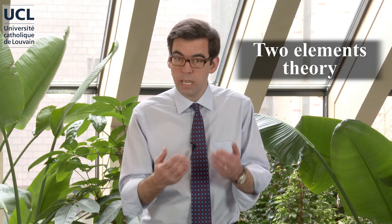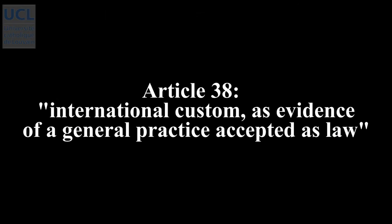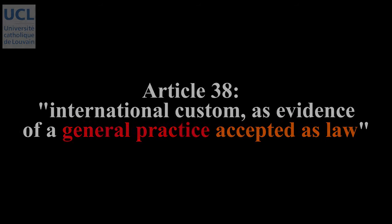The explanation that is generally provided in international law is not much different. The International Court of Justice has developed what has been called the theory of the two elements, which, when they meet, result in the making of rules that can be said to exist as rules of customary international law. The two elements are expressed by Article 38: international custom as evidence of a general practice accepted as law — two elements: general practice, and general practice accepted as law. Let us turn now to some ICJ judgments in order to see the theory of the two elements at play.